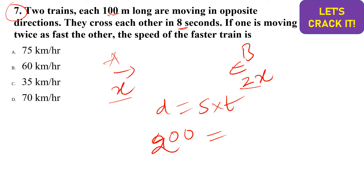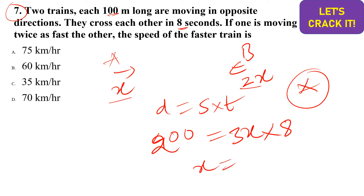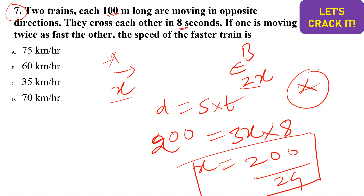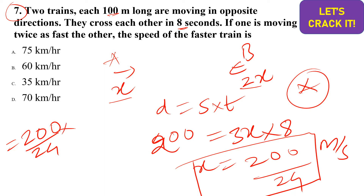When two trains move in opposite directions, the relative speed is the sum of both speeds, so net speed = x + 2x = 3x. Using distance = speed × time: 200 = 3x × 8, so x = 200/24 meters per second. Converting to km/h by multiplying by 18/5, x equals approximately 30 km/h.